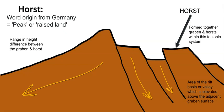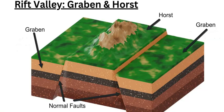So the graben is lower and the horst is higher. When we combine these two landscape features, which are common in rift valley formation, the processes involved include tensional forces, the pulling apart and stretching of the crust, and the thinning of the crust at a continental divergent plate boundary. This is also linked to the juvenile stages of the Wilson cycle — the formation of oceans and the closing of ocean basins to form new supercontinents like Pangea.